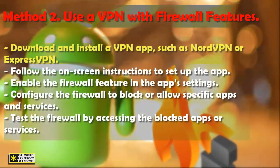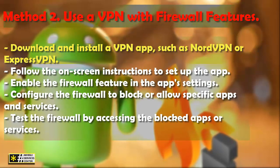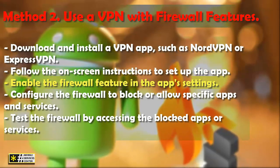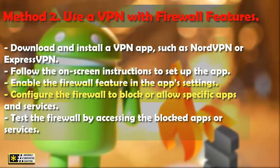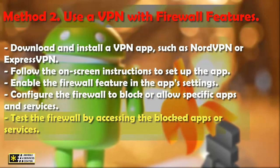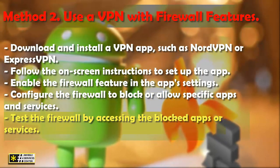Download and install a VPN app, such as NordVPN or ExpressVPN. Follow the on-screen instructions to set up the app. Enable the firewall feature in the app's settings. Configure the firewall to block or allow specific apps and services. Test the firewall by accessing the blocked apps or services.